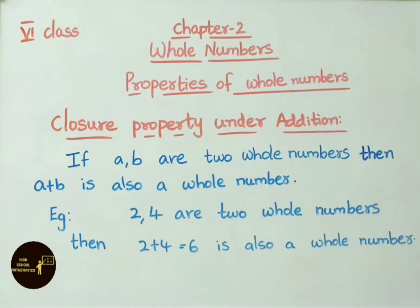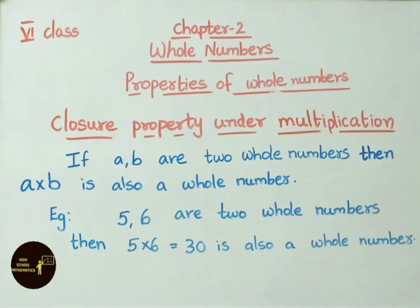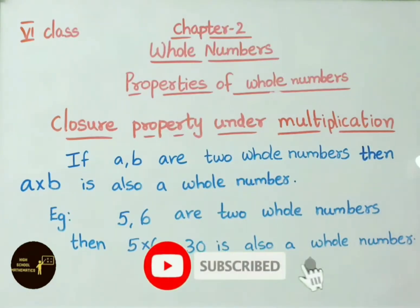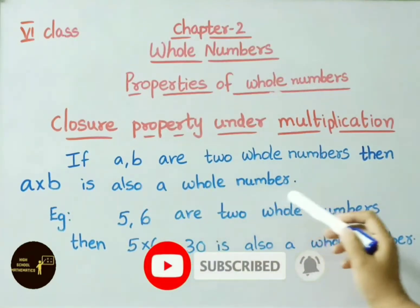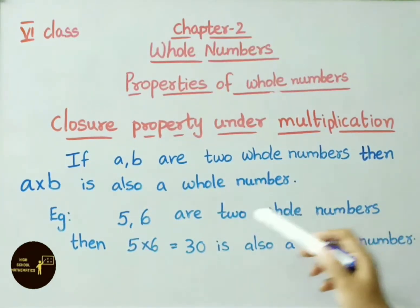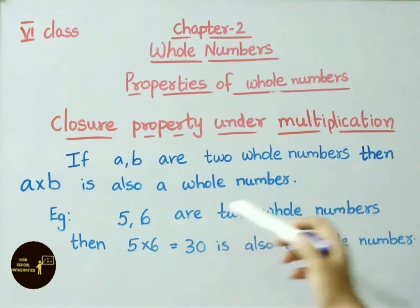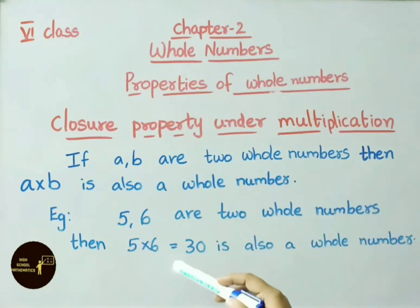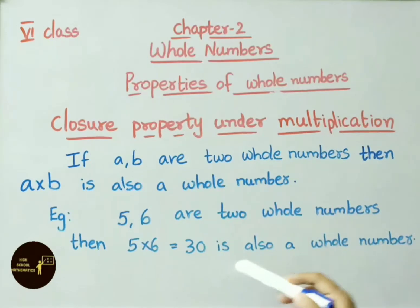Now let us see closure property under multiplication. If a and b are 2 whole numbers, then a into b is also a whole number. For example, 5 and 6 are 2 whole numbers. Then 5 into 6 equals 30, and 30 is also a whole number.